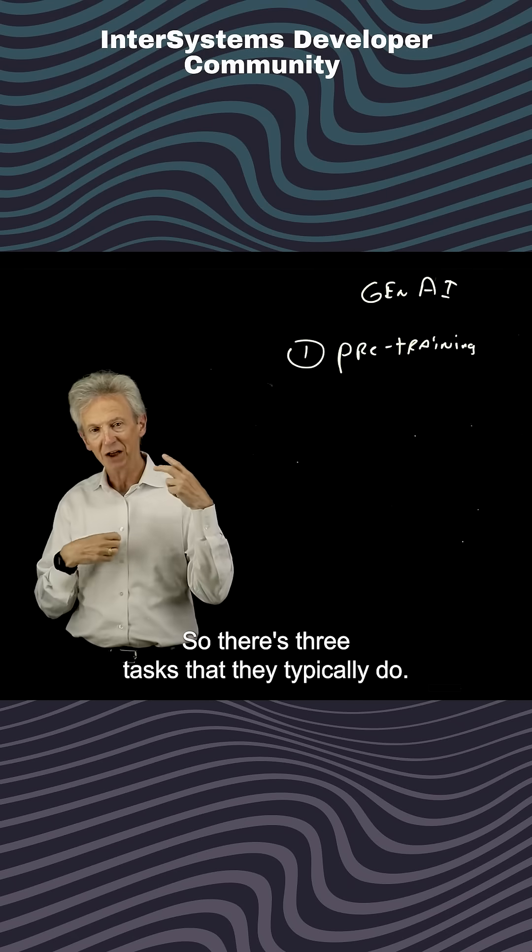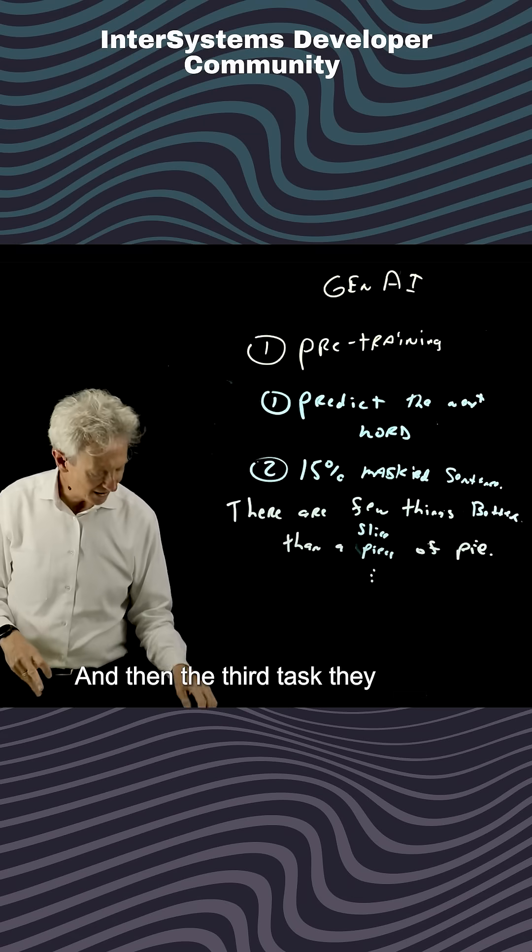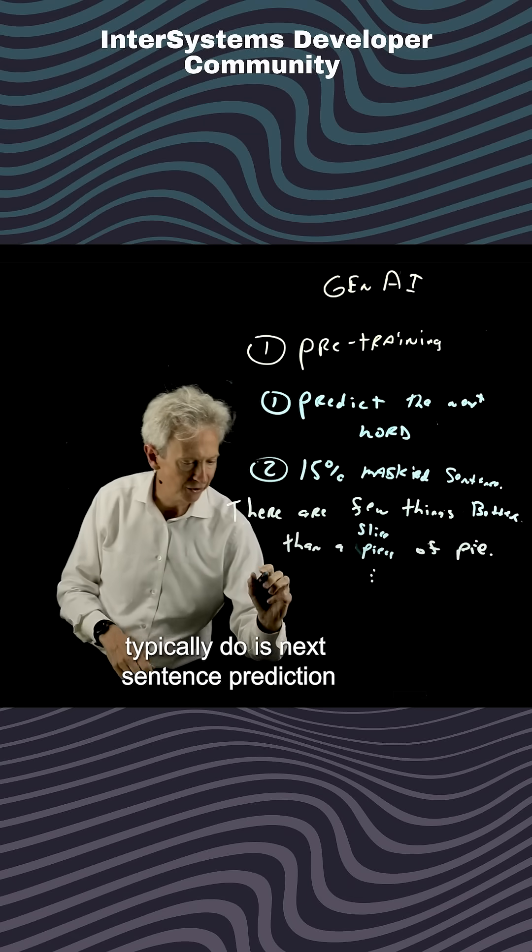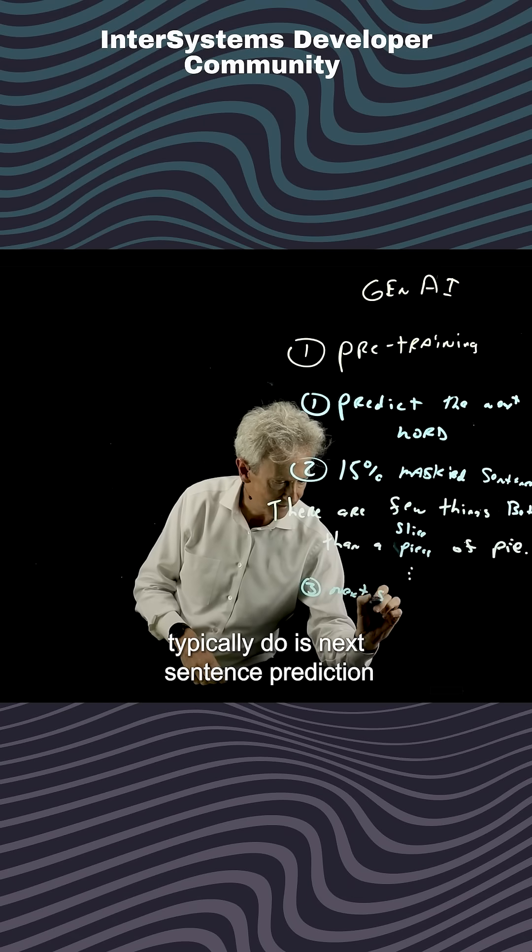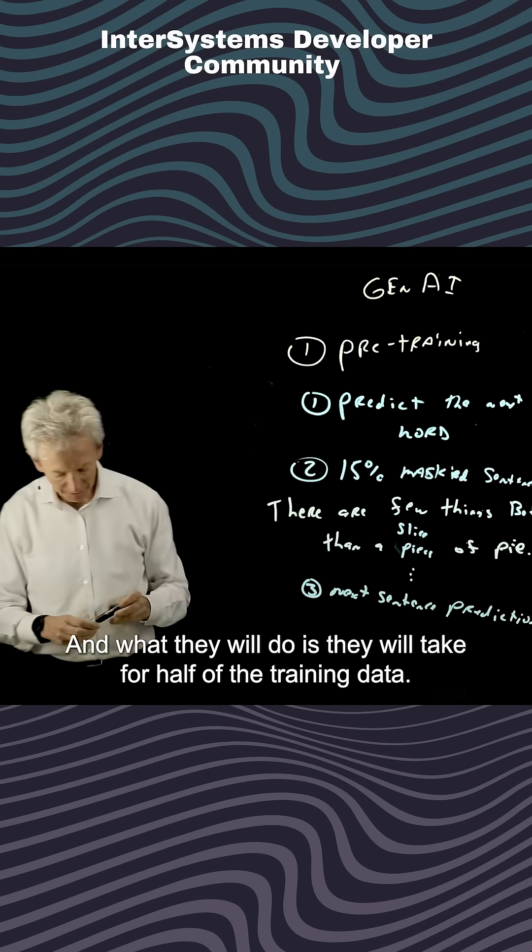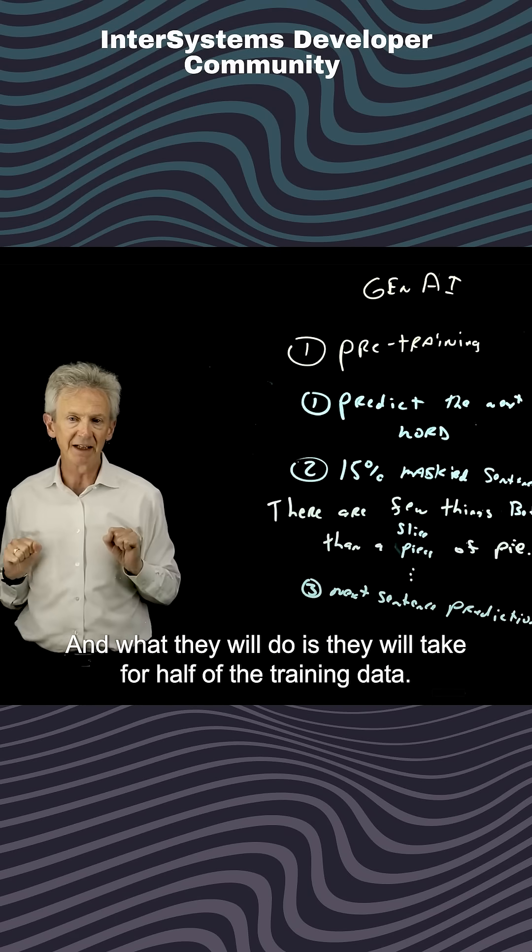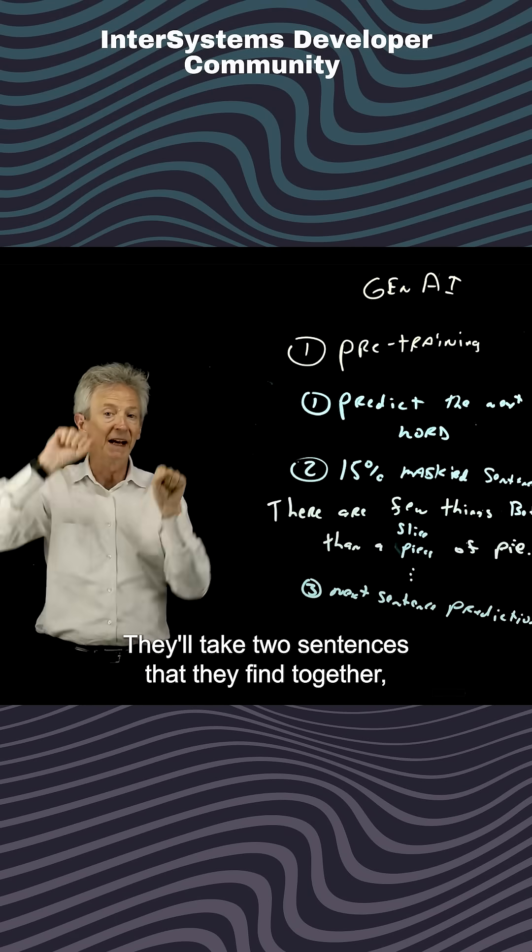So there are three tasks that they typically do. The third task they typically do is next sentence prediction. And what they will do is, for half of the training data, they'll take two sentences that they find together.